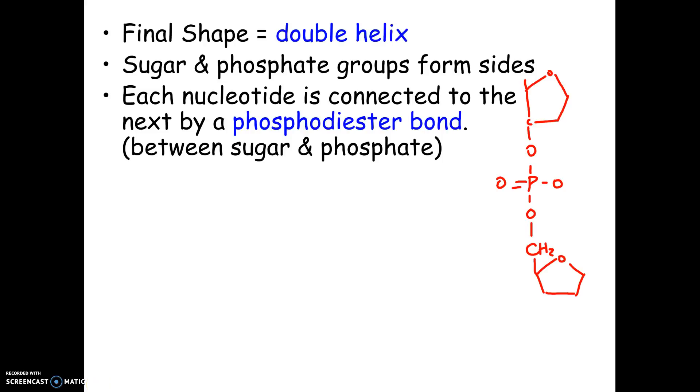All right, so the final shape of DNA is a double helix. The sides, or the backbone as it's called, is the sugar and the phosphate. And they're connected to each other by what are called phosphodiester bonds. It's probably unlikely you'd be asked on a test what a phosphodiester bond looks like, but I did sketch in here really quick. So this is where the phosphate connects to the carbons.